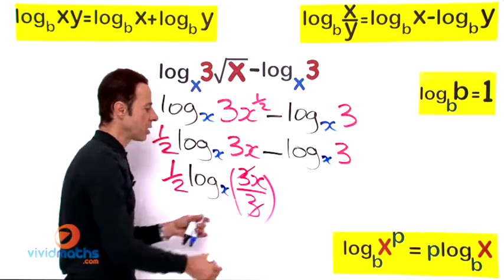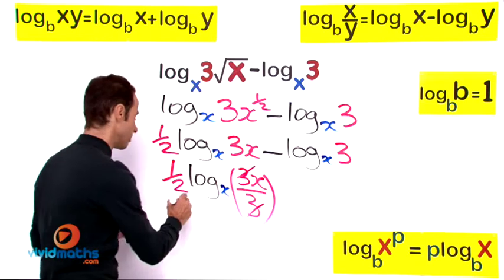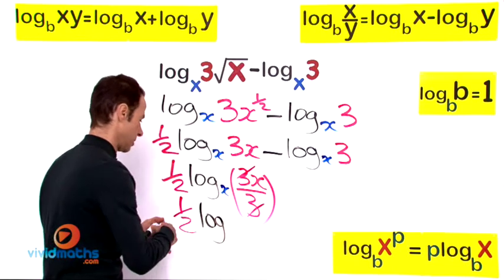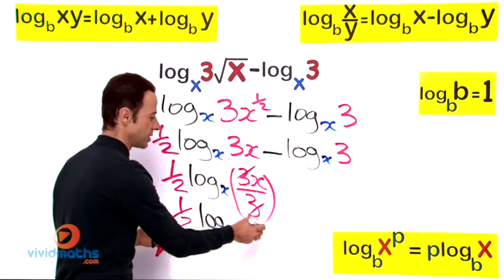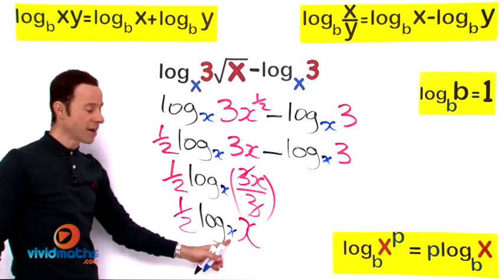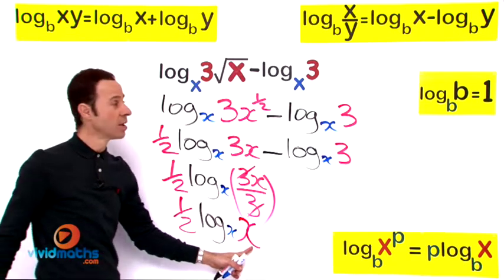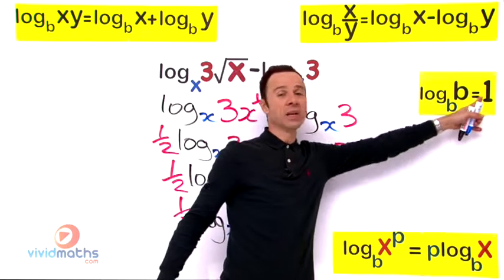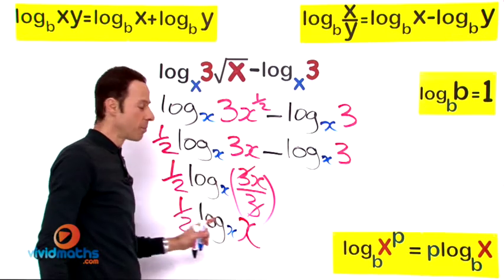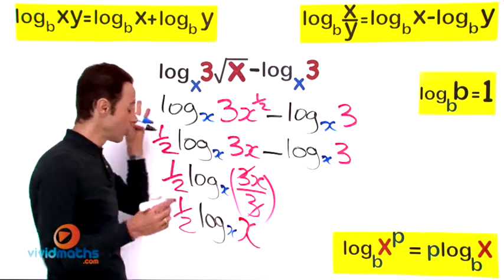We can cancel the 3 top and bottom, leaving just the x over there. So the simplified answer would be 1/2 log base x of x. So we have got a base x and the number being the same. When we got the base and the number being the same, as it is shown right over there, it transforms into a 1. So essentially it is going to be 1/2 multiplied by 1, so the answer is the simplified expression will be 1/2.